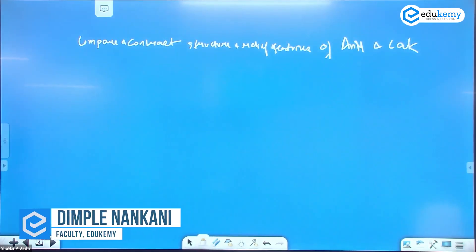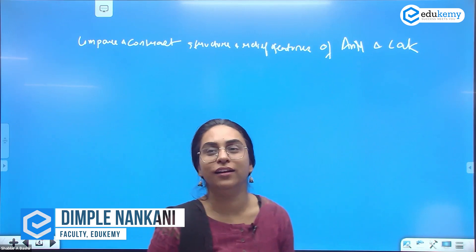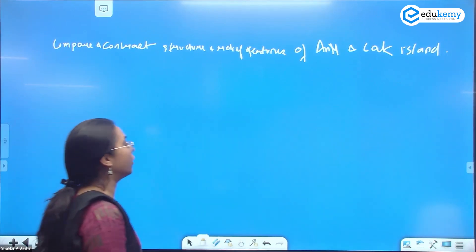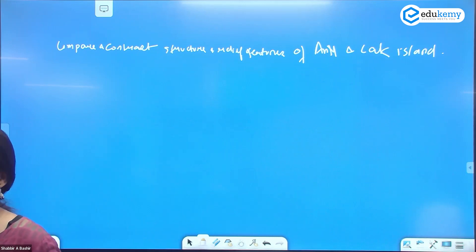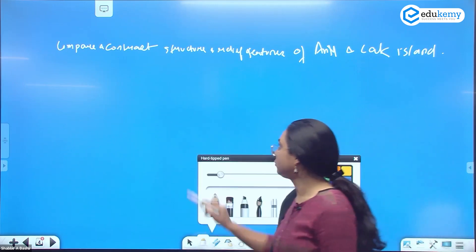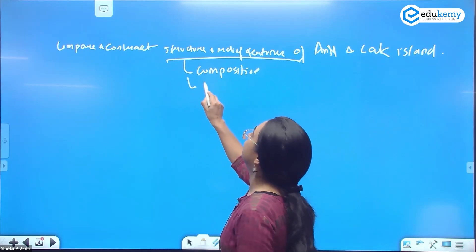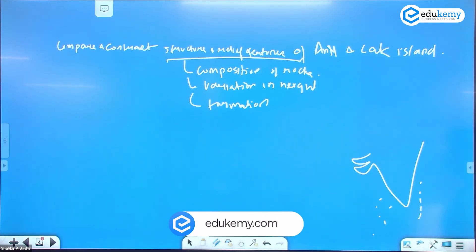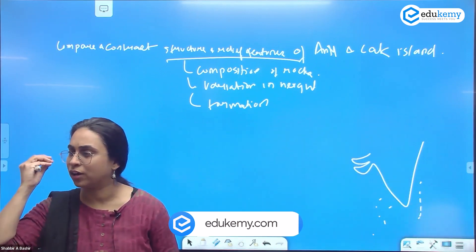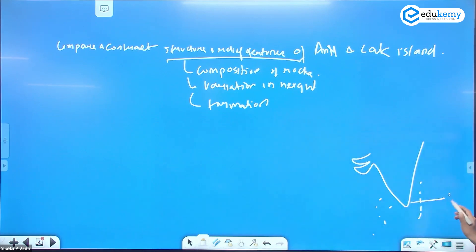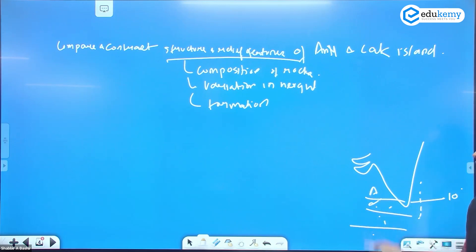Compare and contrast the structure and relief features of Andaman-Nicobar and Lakshadweep. Structure means the composition of rocks, and relief means the variation in height. You should draw on your prelims knowledge here. There is a 10-degree channel, an 8-degree channel, a 9-degree channel, and an 11-degree channel — along with features like Amandivi, Cannanore, Minicoy, and the Maldives.